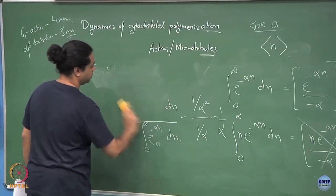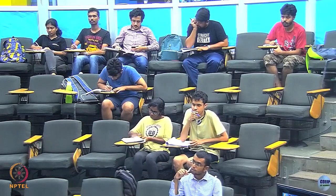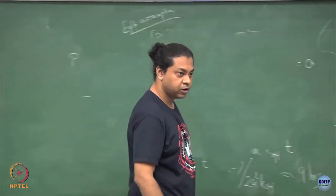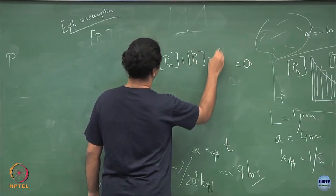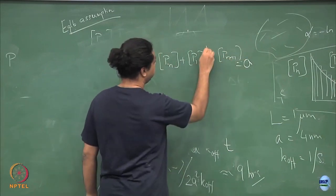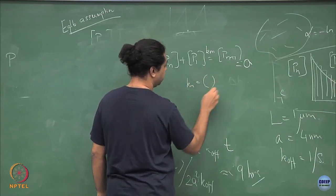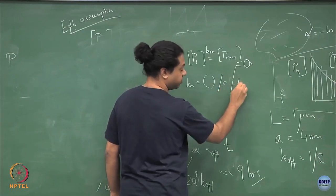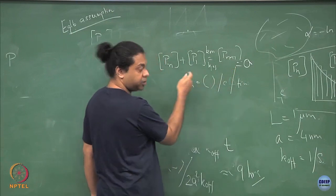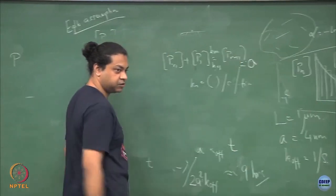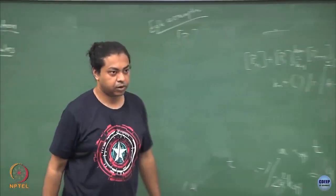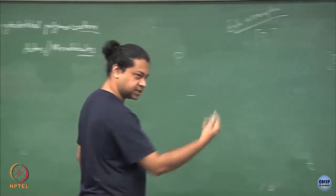Let me do a slightly more involved model that takes into account that the concentration of monomers itself is a variable quantity. The on-rate k_on has units of per concentration per time, whereas the off-rate is just per time, because you need a monomer coming in to give you the n+1 length filament. I just took that monomer concentration as c*, but now we will relax that.